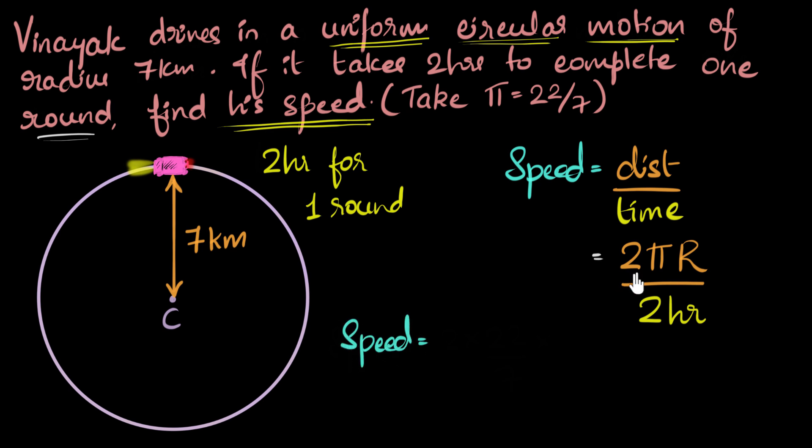Speed equals two pi. They asked us to take pi as 22 by seven. It's not exactly 22 by seven, but they've asked us to do that so the calculations become simpler. Times the radius. The radius is seven kilometers. Divide by two hours. And let's see how much we get. This cancels and this cancels. So we end up with 22. That's the speed. The speed of our vehicle is going to be 22 kilometers per hour.